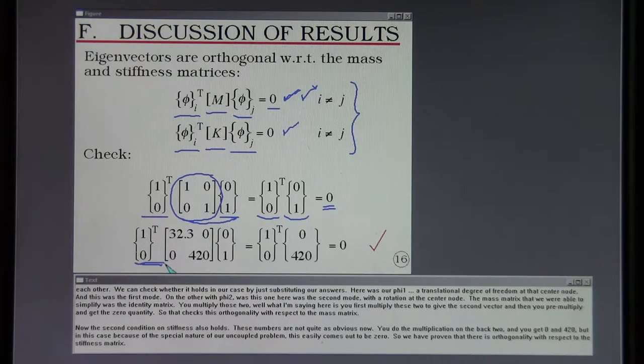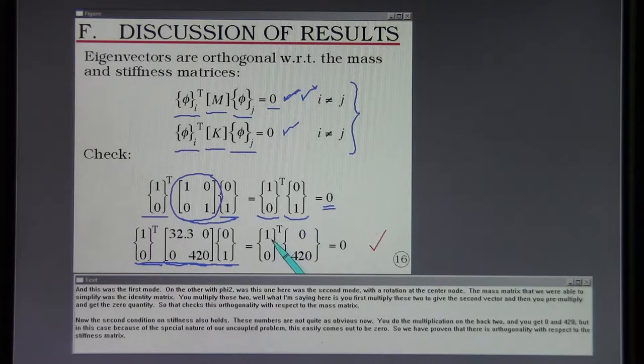Now the second condition on stiffness also holds. These numbers are not quite as obvious now. You do the multiplication on the back two and you get zero and 420. But in this case, because of the special nature of our uncoupled problem, this easily comes out to be zero. So we have proven that there is orthogonality with respect to the stiffness matrix.